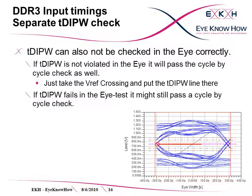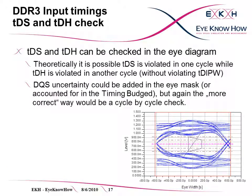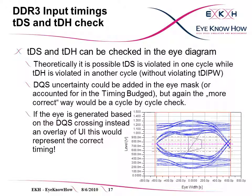The TDIPW is the reason why data setup and data hold cannot both be critical in the same cycle. Checking setup and hold time in the eye diagram is possible, but not as easy as one might think. Due to the eye generation, setup and hold violations can be seen in one picture even if they come from different cycles. But the DQS uncertainty is still missing. There are several ways to solve this: add the DQS uncertainty in the eye mask or in a separate timing budget calculation — this is again worst case as it does not consider cycle-accurate timings. The second option is to generate the eye referenced to the DQS crossing instead of just overlaying unit intervals. Or to do a full cycle-by-cycle calculation.